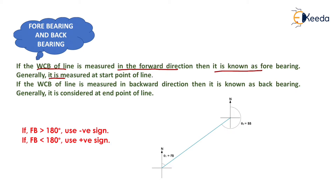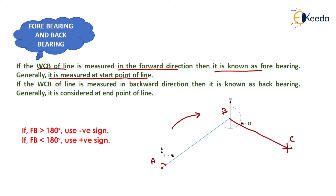Generally it is measured at the start point of the line. Now suppose that our traverse is moving in the direction a-b, b-c — that is the forward direction. If the whole circle bearing of the line is measured in the forward direction from the start point of the line, then this bearing is known as forebearing, which is represented by theta1 here.